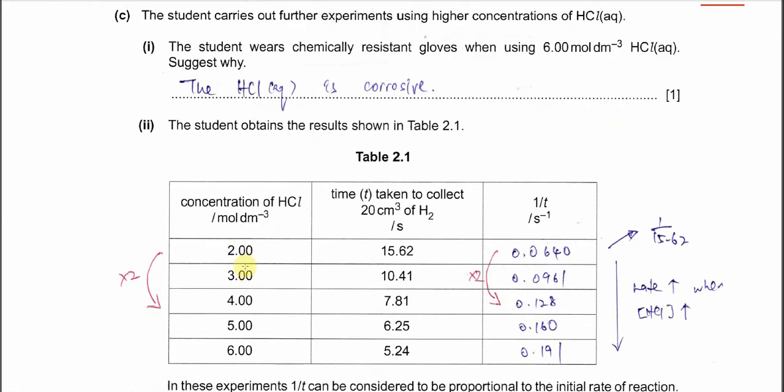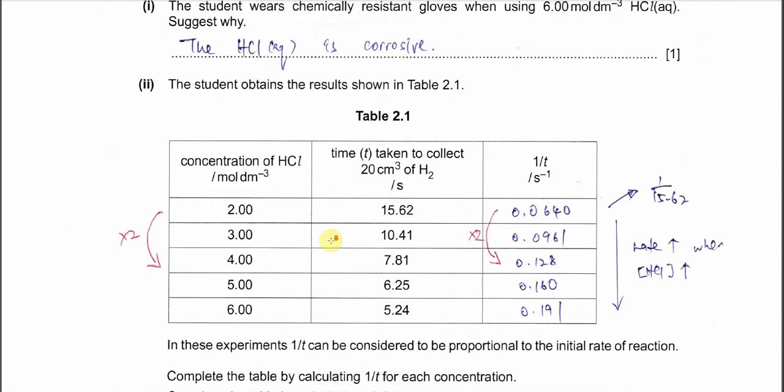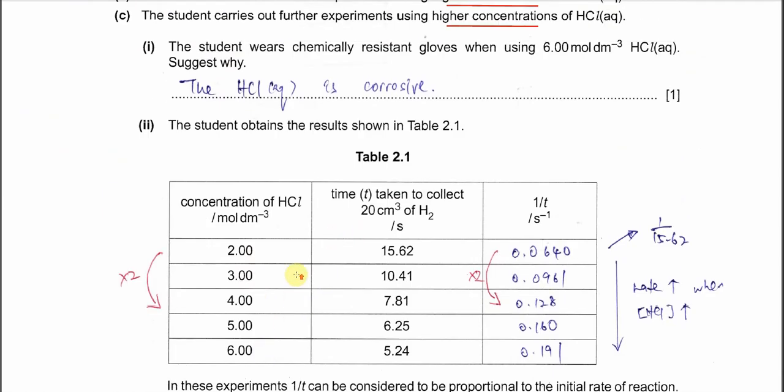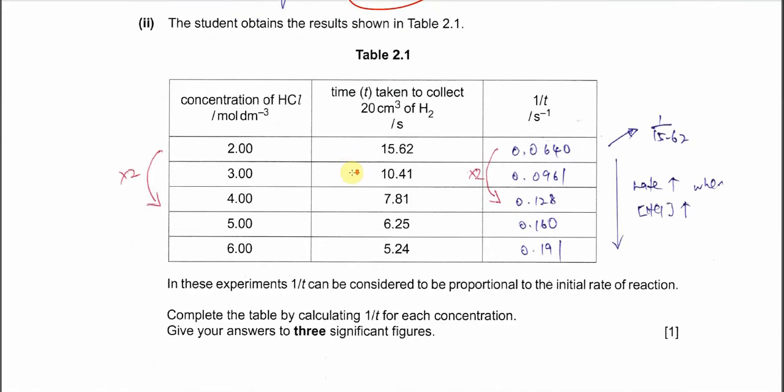Part C. The student carries out further experiments using higher concentration of HCl - more than 2, up to 6 mol per dm³. Part 1: The student wears chemically resistant gloves when using 6 mol per dm³ HCl. Why? It's quite easy - because it's a strong acid and it's concentrated, therefore it's corrosive.